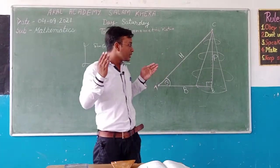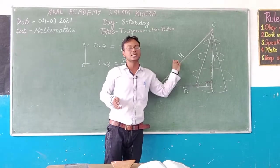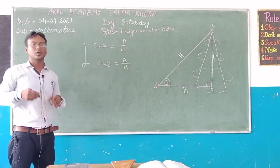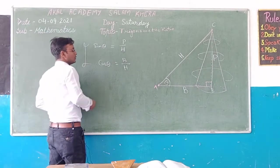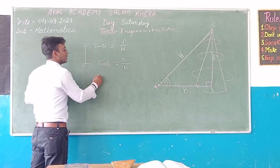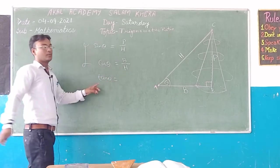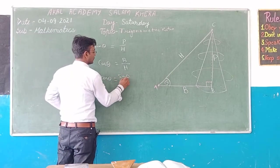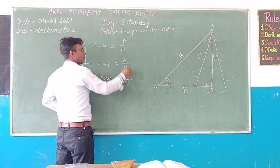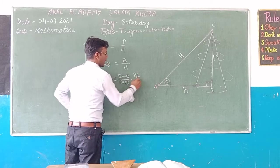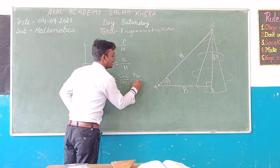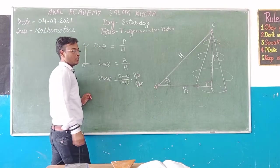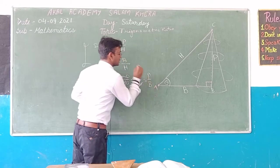Now, how many ratios can you take using these three sides? Yes, we can take six ratios. Two we have already written, and four more we will write. The third ratio is tan theta, which equals the ratio of sin theta to cos theta. Sin theta is perpendicular by hypotenuse, and cos theta is base by hypotenuse. Cancelling hypotenuse from both, we get tan theta equals perpendicular by base.